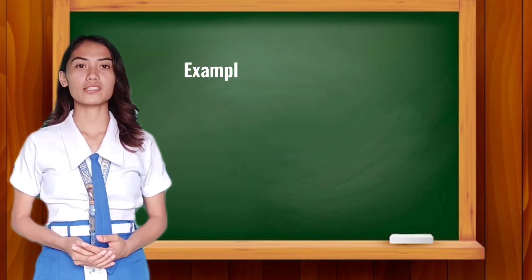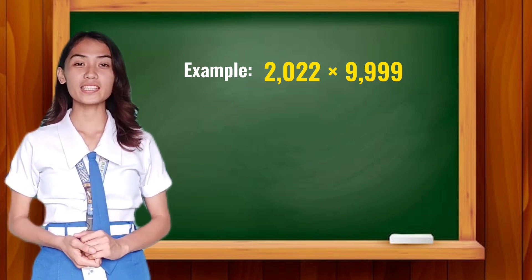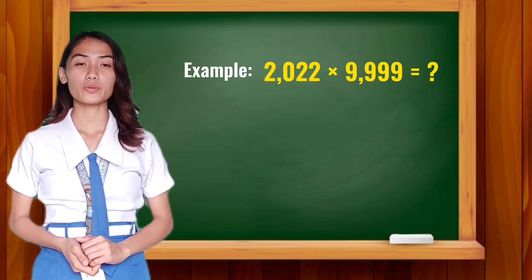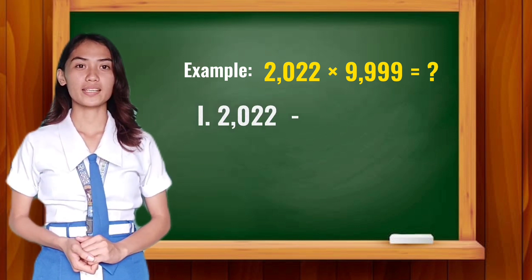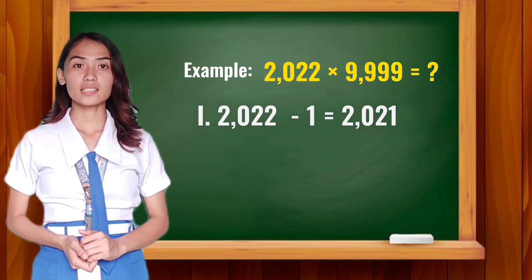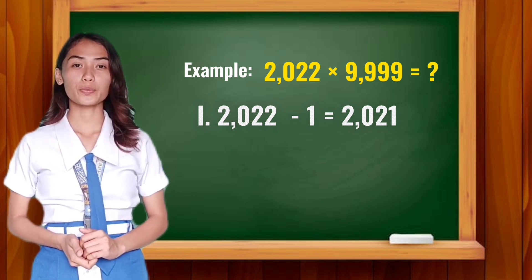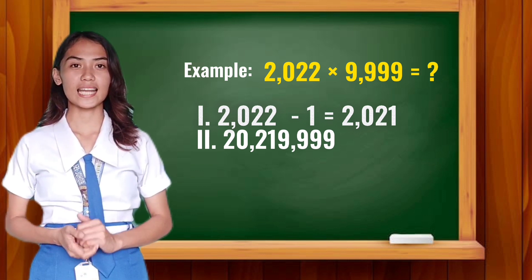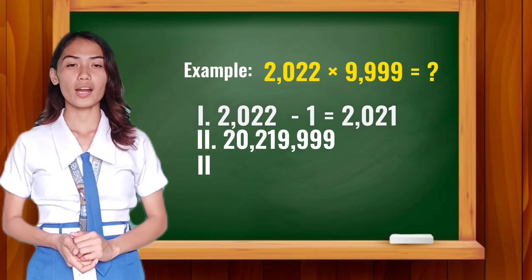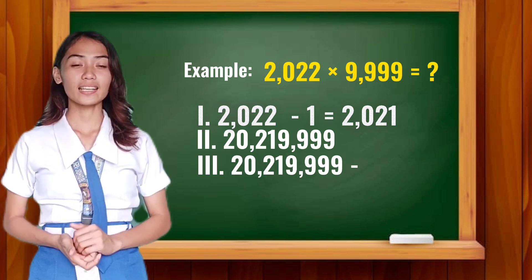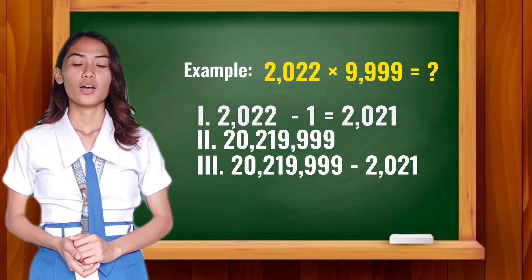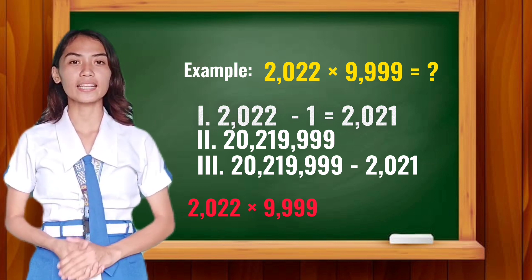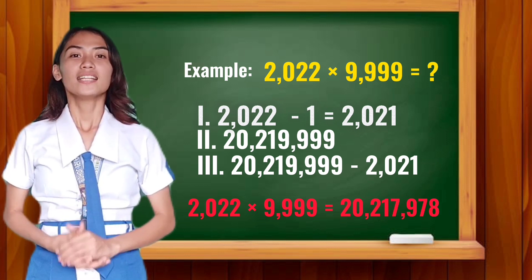How about let's try some examples dealing with higher numbers. We have here 2,022 times 9,999. First step: Subtract 2,022 by 1. So, 2,022 minus 1 is equal to 2,021. Next, copy 2,021 together with 9,999. It will be 20,219,999. Lastly, subtract 20,219,999 by 2,021. Therefore, the product of 2,022 multiplied by 9,999 is 20,217,978.